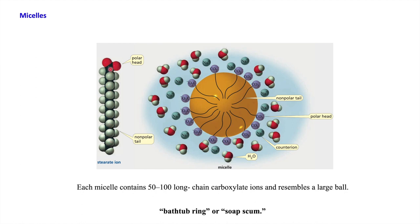Now we come to micelles. In soap, there is a polar carboxylate group and a non-polar hydrocarbon chain. When soap is added to water, the non-polar hydrocarbon part is hydrophobic and repels water. The chains arrange themselves inward in a circular manner, creating a ball shape, while the carboxylate groups face outward interacting with water. This cluster of 50 to 100 fatty acid components is called a micelle.